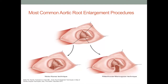Posterior enlargement of the aortic root is accomplished by either the Nicks or Manouguian techniques. The Nicks method is a vertical incision through the commissure between the left coronary cusp and the non-coronary cusp extending down into the interleaflet triangle. The Manouguian method is a vertical incision through the mid portion of the non-coronary sinus, through the aortic annulus and into the anterior leaflet of the mitral valve and the roof of the left atrium. Both approaches are the most commonly accepted and widely used techniques for aortic root enlargement.